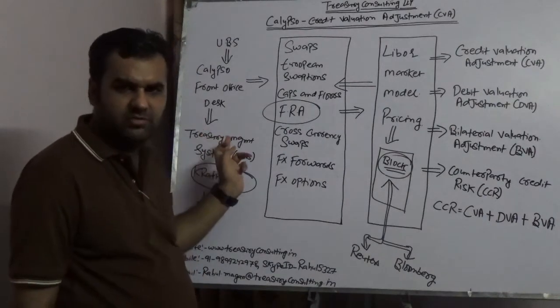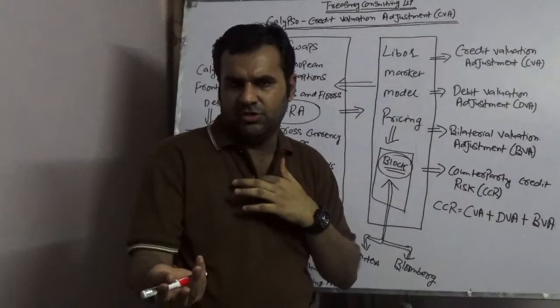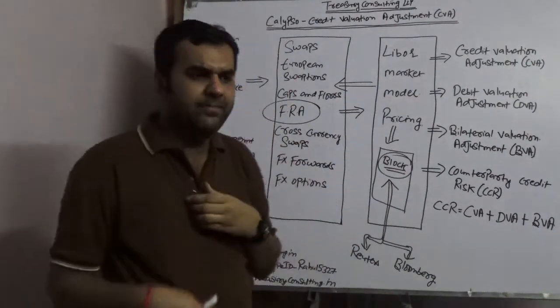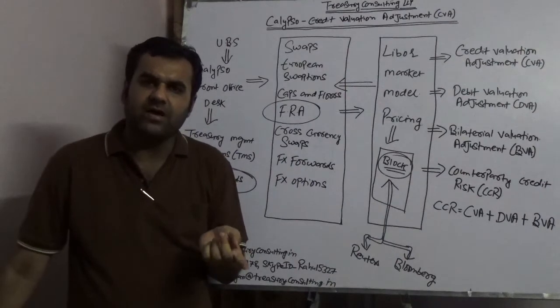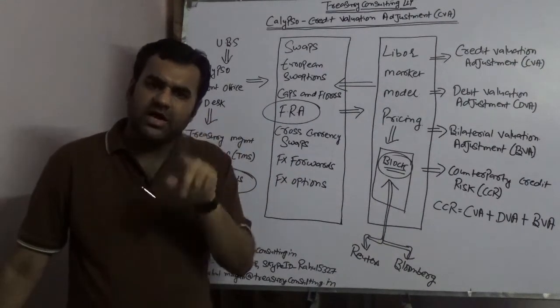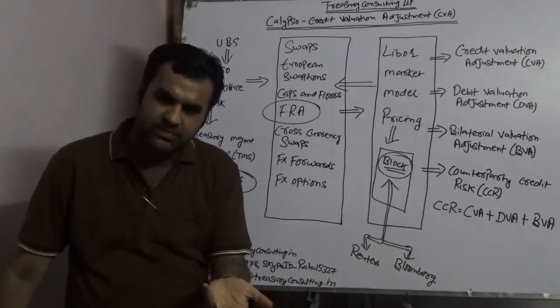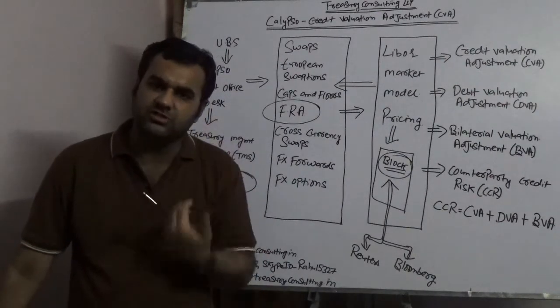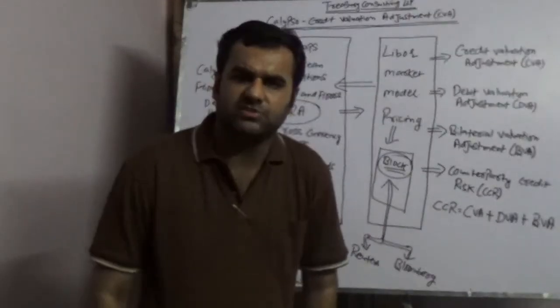That CDS has a cost, and that cost needs to be priced here in this block. This cost is coming from iTraxx, which is available on both Reuters and Bloomberg. That iTraxx gives you the valuation, and that valuation is coming into the pricing which UBS is giving to Kraft. BVA is the mirror image of CVA. What would happen if UBS will default?